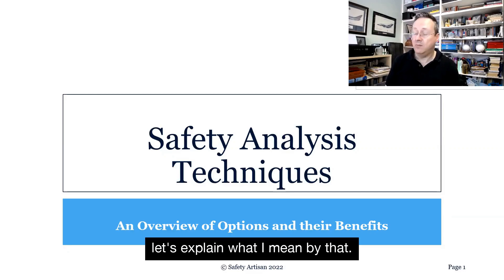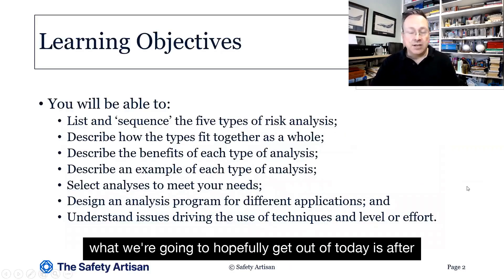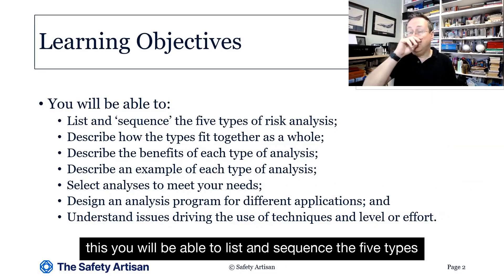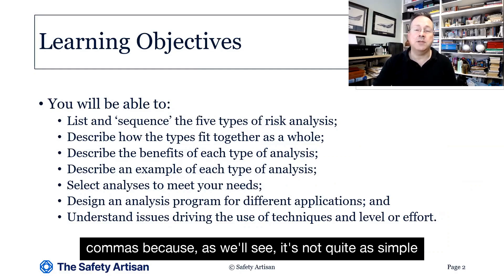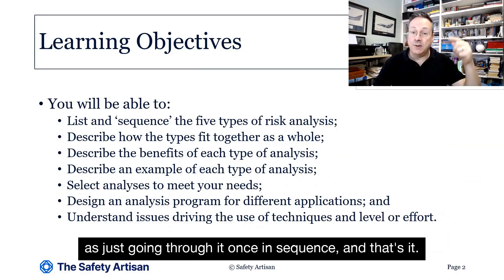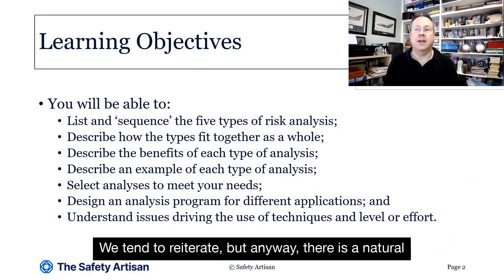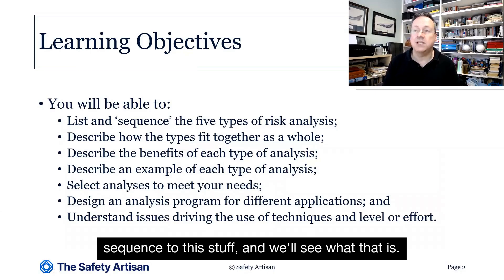So what we're going to hopefully get out of today is: after this, you will be able to list and sequence the five types of risk analysis. It says 'sequence' in inverted commas, because as we'll see, it's not quite as simple as just going through it once in sequence and that's it. We tend to iterate. There is a natural sequence to this stuff and we'll see what that is.